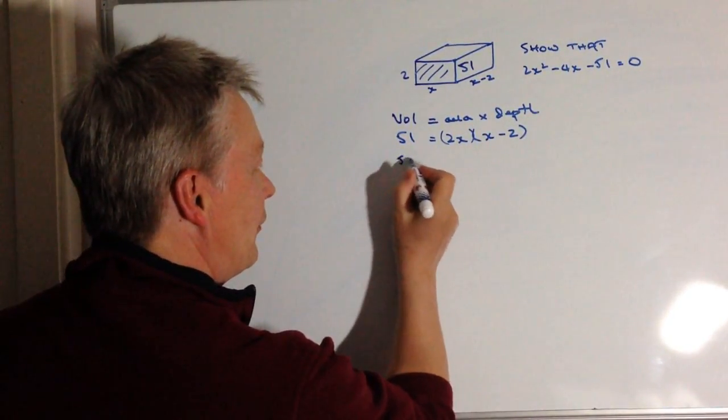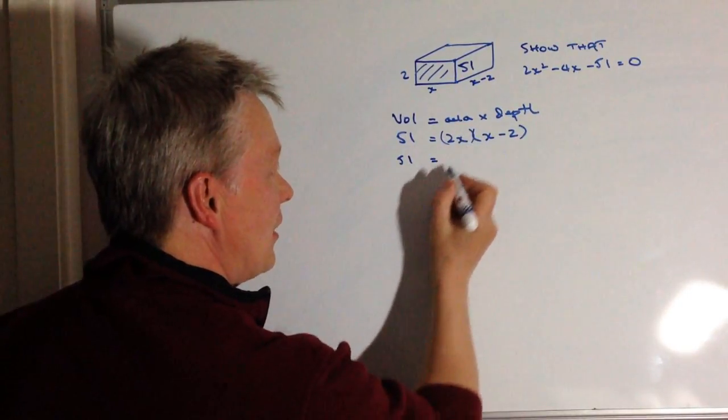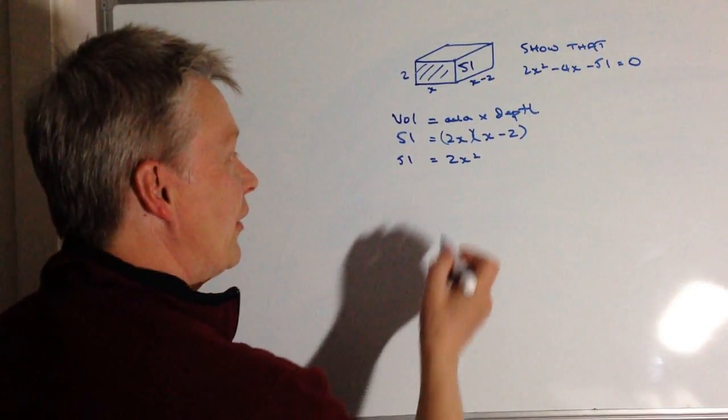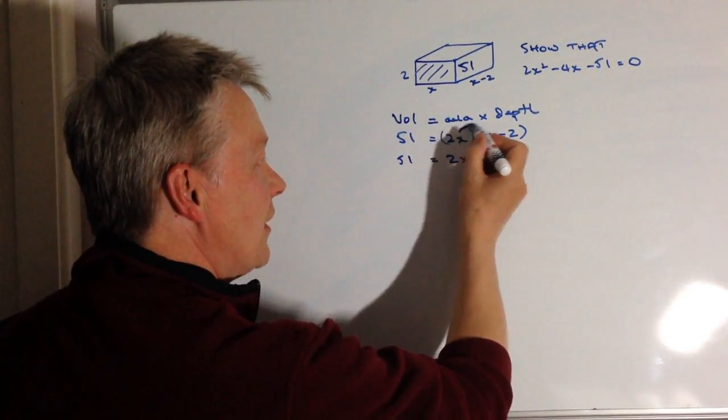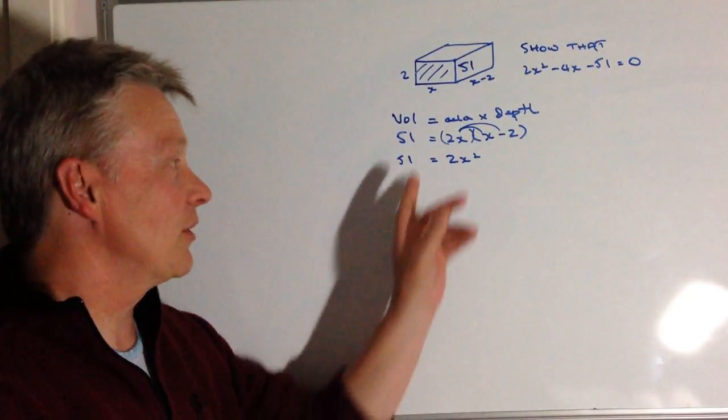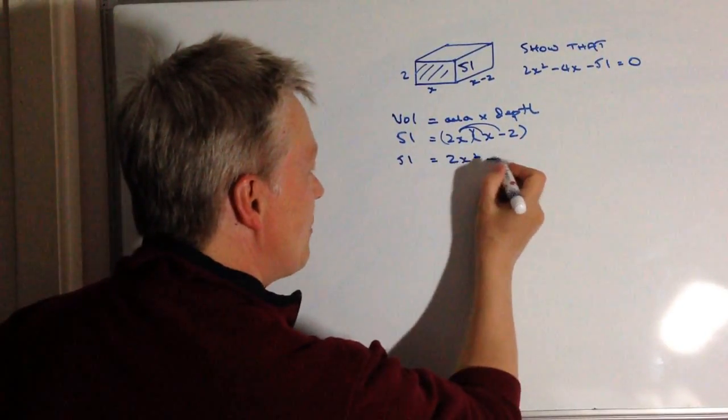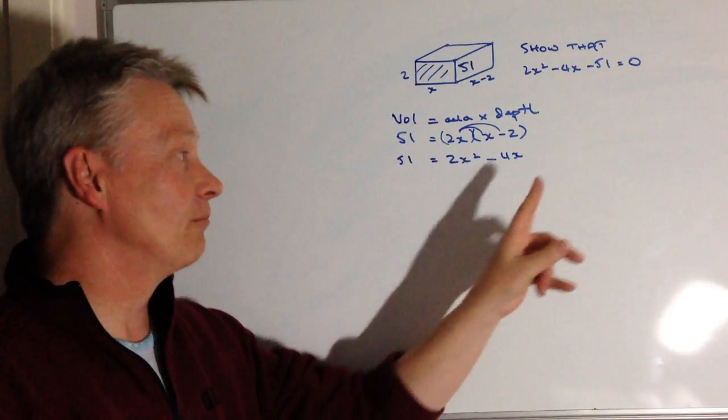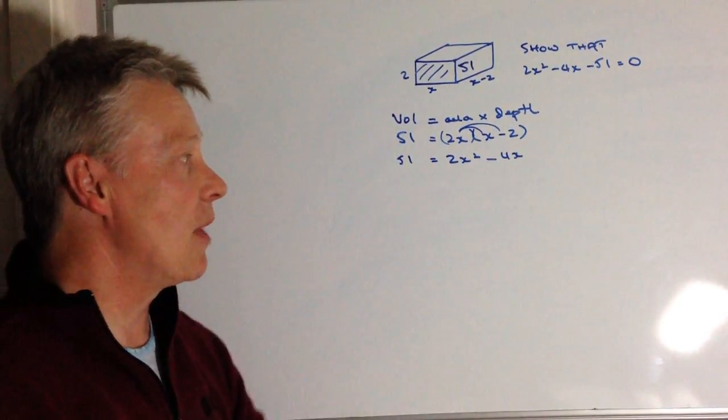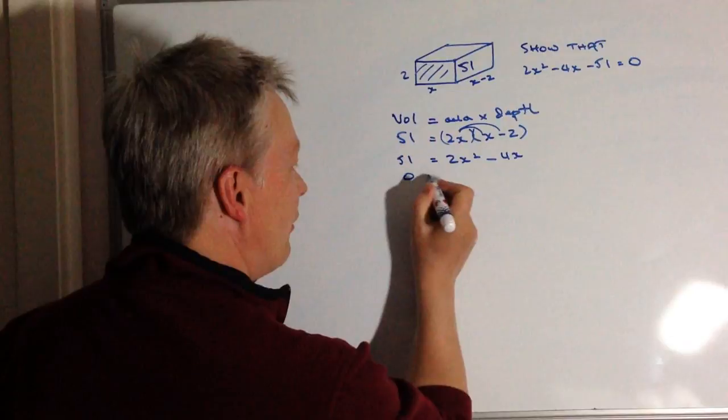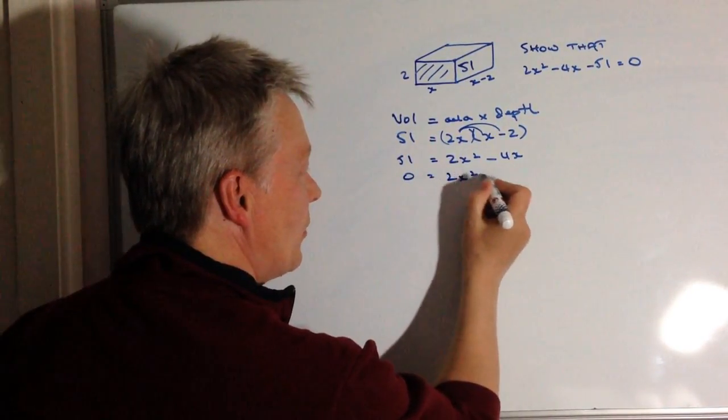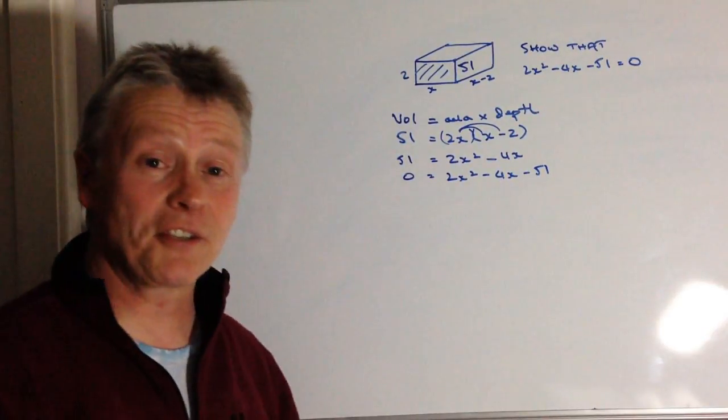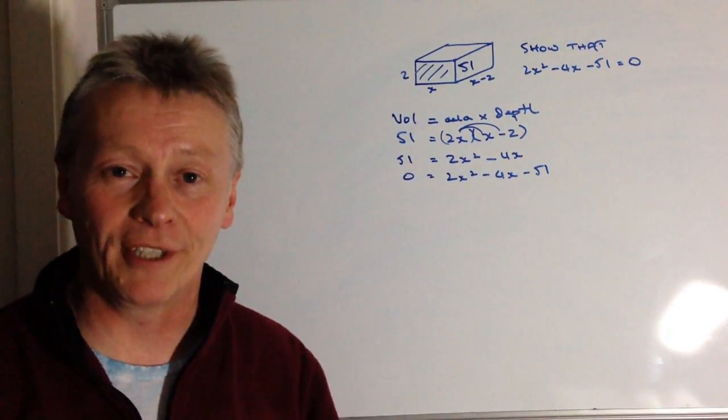So the first thing is I'll leave that 51 there, but 2x times x is going to be 2x squared, and then 2x times minus 2, don't forget I'm multiplying each of these terms individually, so 2x times minus 2 is minus 4x. If I bring that 51 over to this side, it means it's going to be minus 51, so 0 equals 2x squared minus 4x minus 51, and that's the answer to that particular question. Hope that's been okay for you.